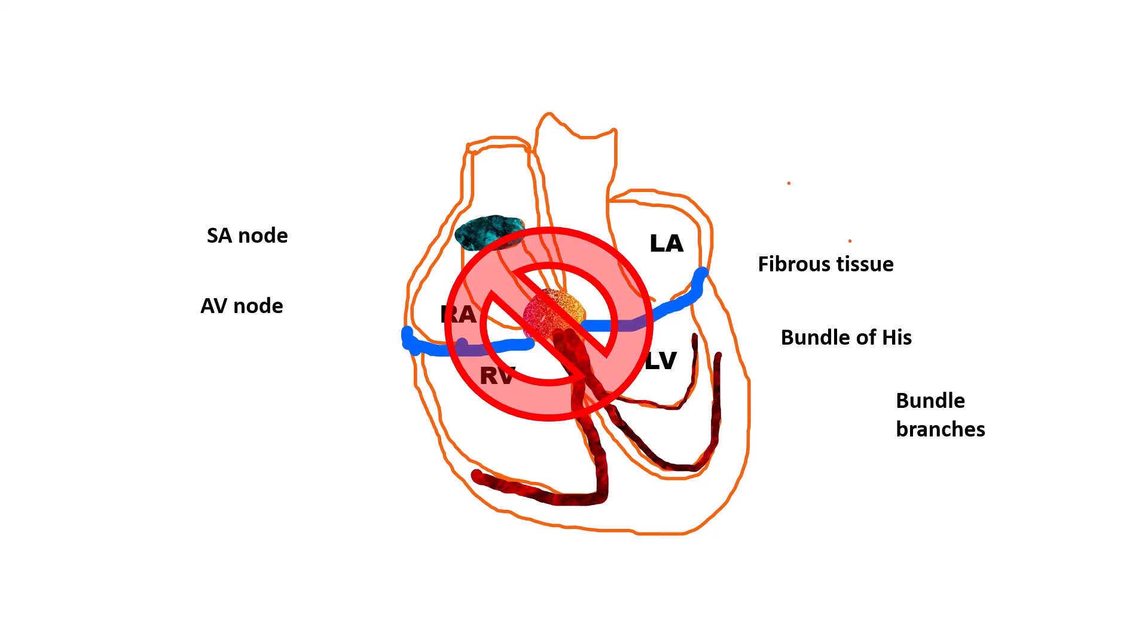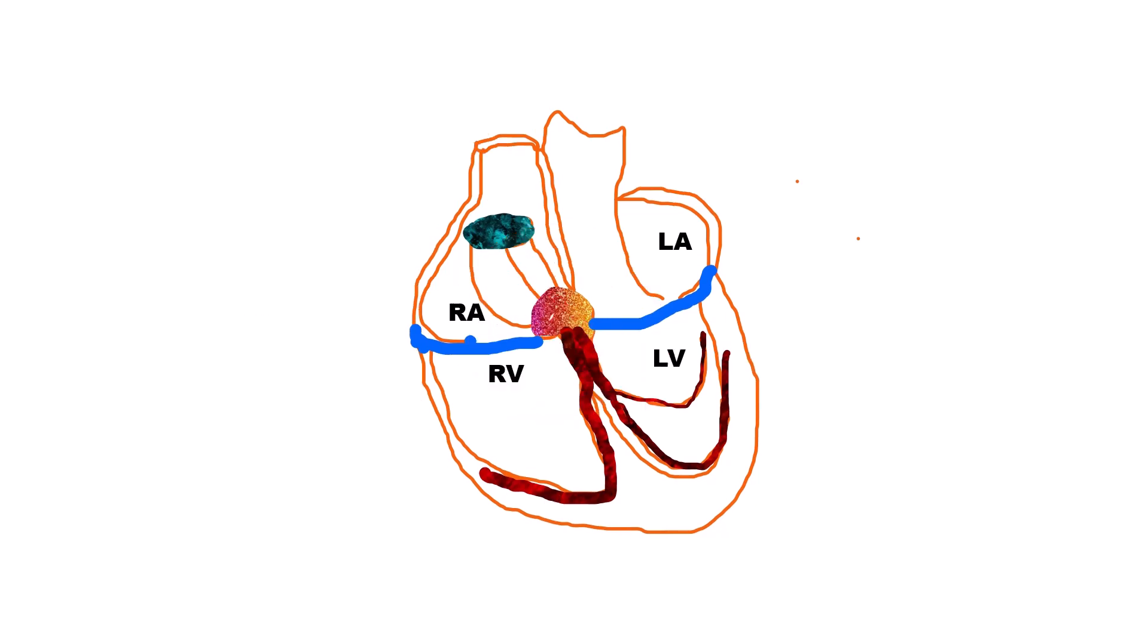The atria may continue to be paced by the sinoatrial node or by an ectopic focus or by atrial fibrillatory activity. The ventricles are paced by a nodal or infranodal escape or backup pacemaker located below the point of block.